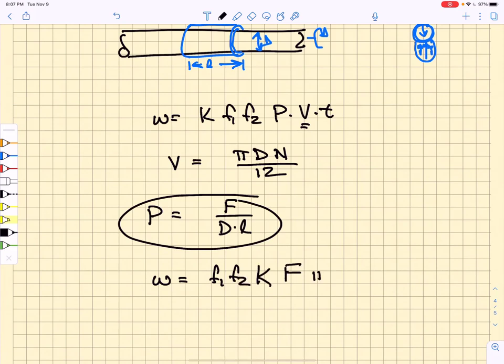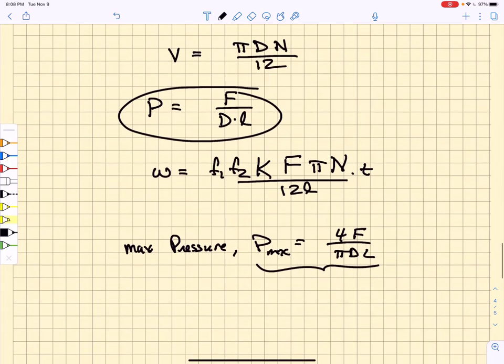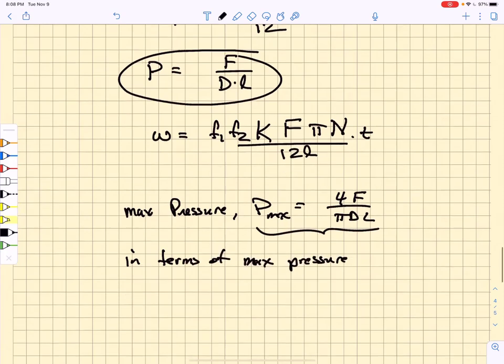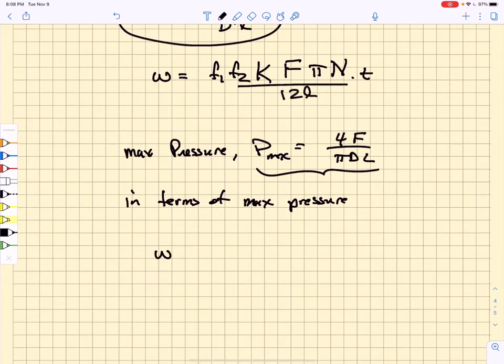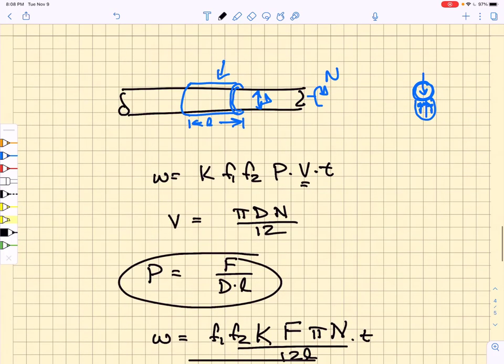Now it turns out that the maximum pressure is just equal to 4·F over π·D·L. And so in terms of max pressure, we write this wear equation as f1·f2·k·F·n·t over 3·L. The reason we have to do this is because of this parabolic pressure. The wear function depends upon the magnitude of the pressure, so we get uneven wear.